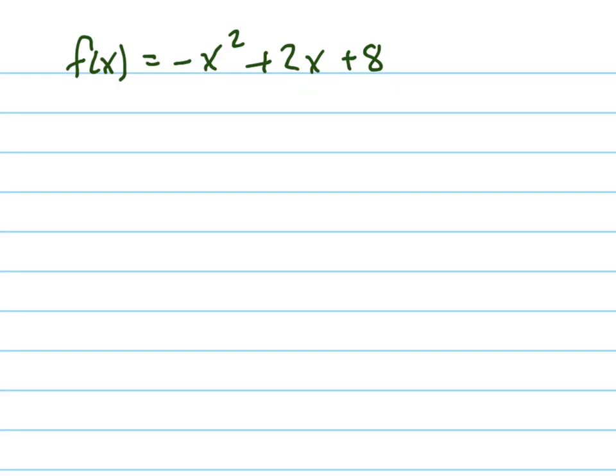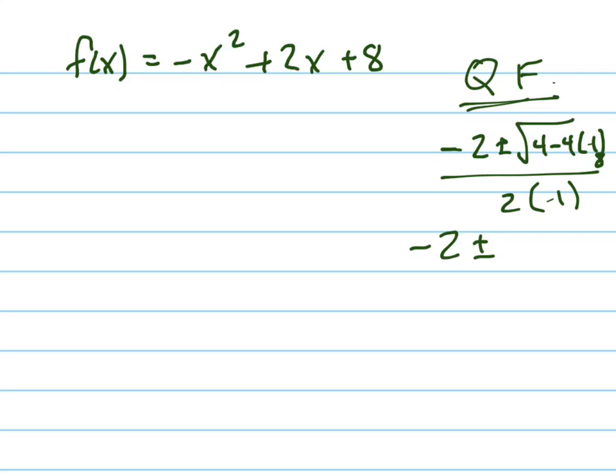So the ways that I can do this are, I can use the quadratic formula. That'd be kind of a waste of time, but it'd be negative b plus or minus the square root of b squared minus 4ac all over 2a, and it would be negative 2 plus or minus the square root of 38.